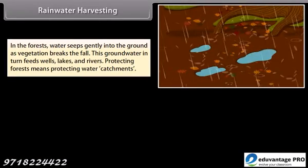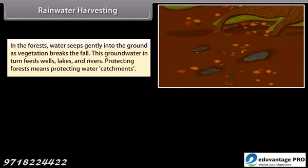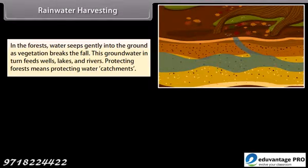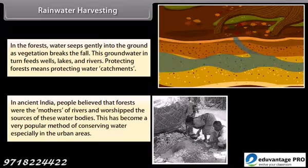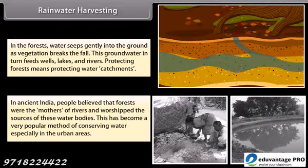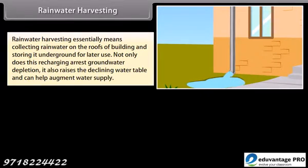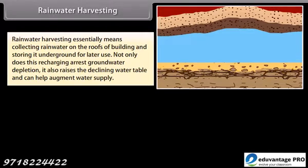In the forests, water seeps gently into the ground as vegetation breaks the fall. This groundwater in turn feeds wells, lakes and rivers. Protecting forests means protecting water catchments. In ancient India, people believed that forests were the mothers of rivers and worshipped the sources of these water bodies. Rainwater harvesting has become a very popular method of conserving water, especially in urban areas. It essentially means collecting rainwater on the roofs of buildings and storing it underground for later use. Not only does this recharging arrest groundwater depletion, it also raises the declining water table and can help augment water supply.